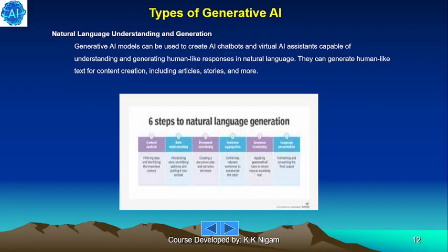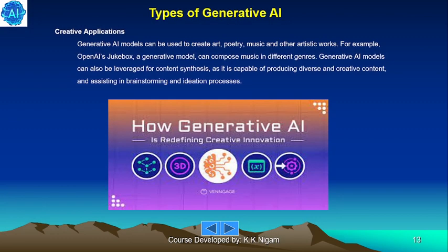Natural language understanding and generation. Generative AI models can be used to create AI chatbots and virtual assistant systems capable of understanding and generating human-like responses in natural language. They can generate human-like text for content creation including articles, stories and more. In creative applications, Generative AI models can create art, poetry, music and other artistic works. For example, OpenAI's Jukebox is a generative model that can compose music in different genres. Generative AI can also be leveraged for content synthesis, producing diverse and creative content and assisting in brainstorming and ideation.